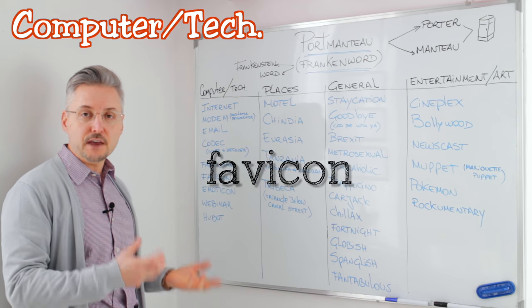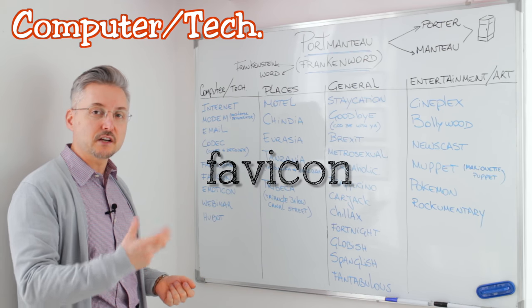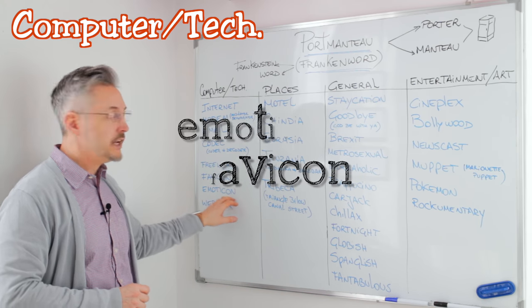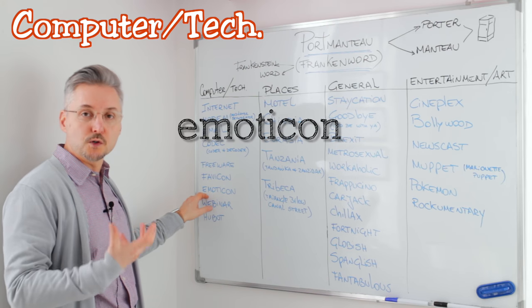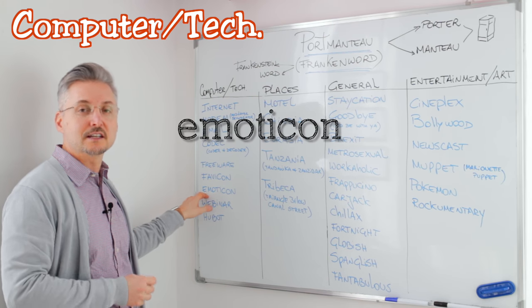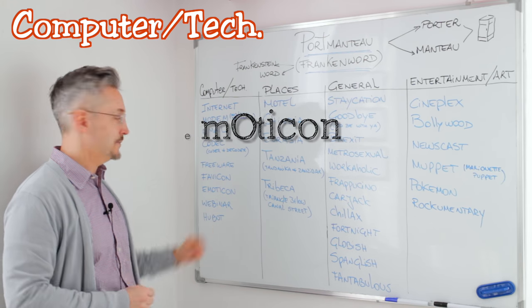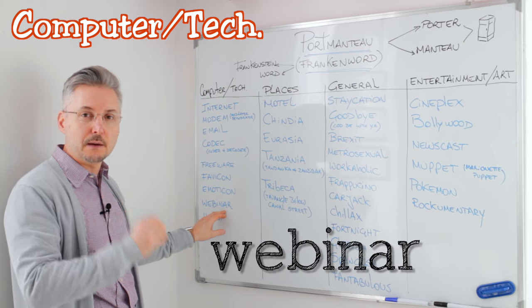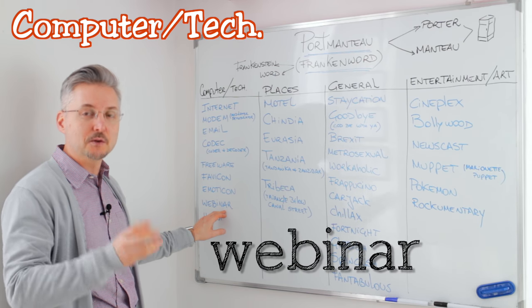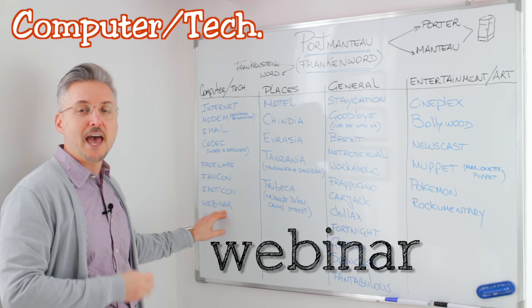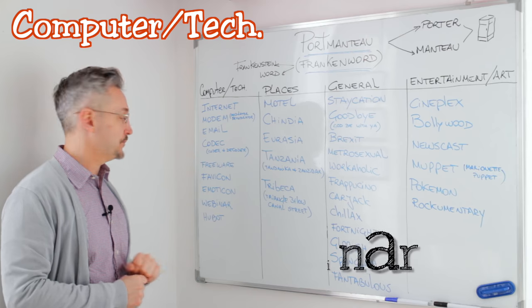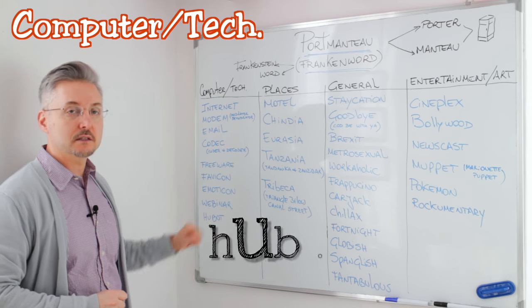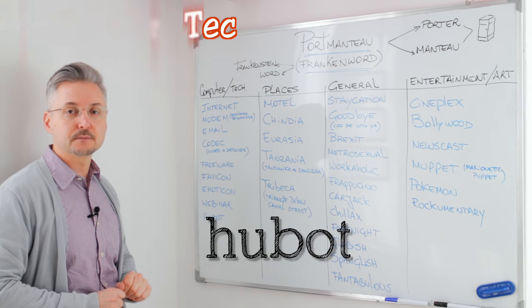Favicon: favorite and icon. Emoticon: emotional and icon. Webinar: the web — WWW is the web — and seminar. Hubot: human and robot.